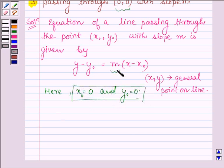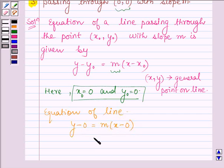And slope is m itself. Therefore, equation of line is given by y minus 0 is equal to m times of x minus 0, or y is equal to mx.